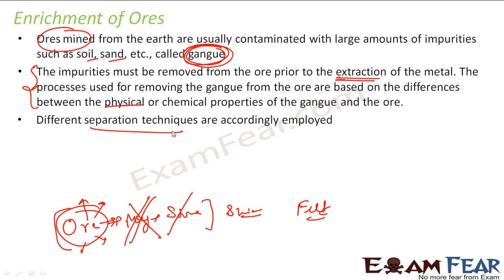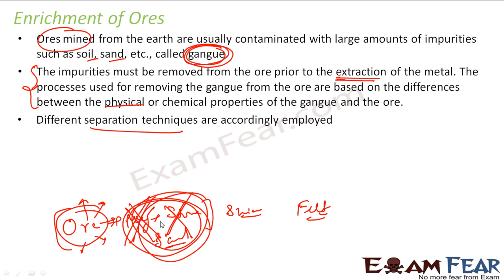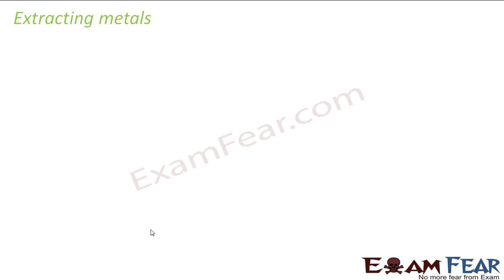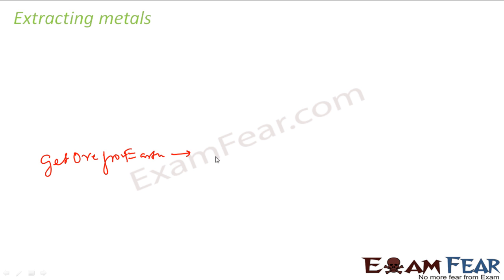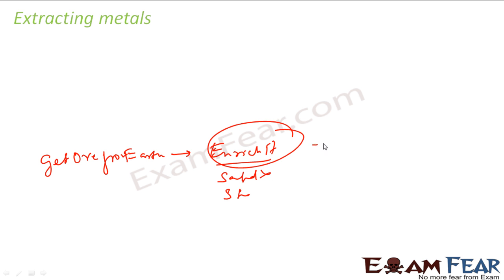Just understand that before you get the ores from nature, it has mud, stone, and sand in it because nature is composed of these things. You want to remove all these unnecessary things because before you start the reaction — the ore is really in the oxide form — before you start the reduction process or any other process, you want to remove these impurities. The removal of this is called enrichment of ores. Once your ore is enriched and you have ore without sand or mud, you start the extraction process of the metal.